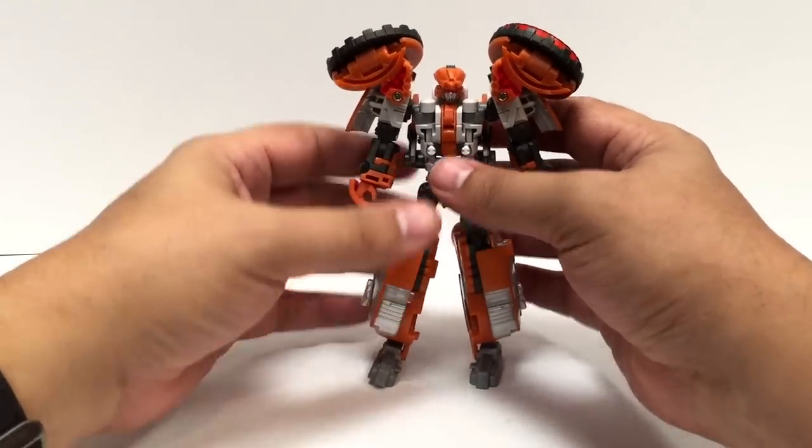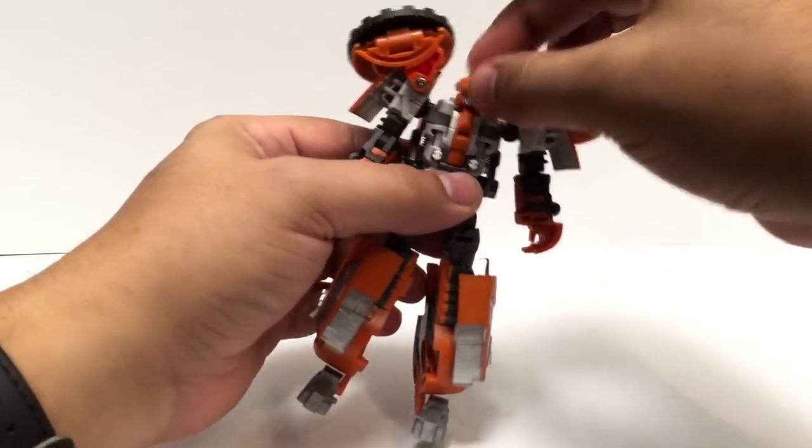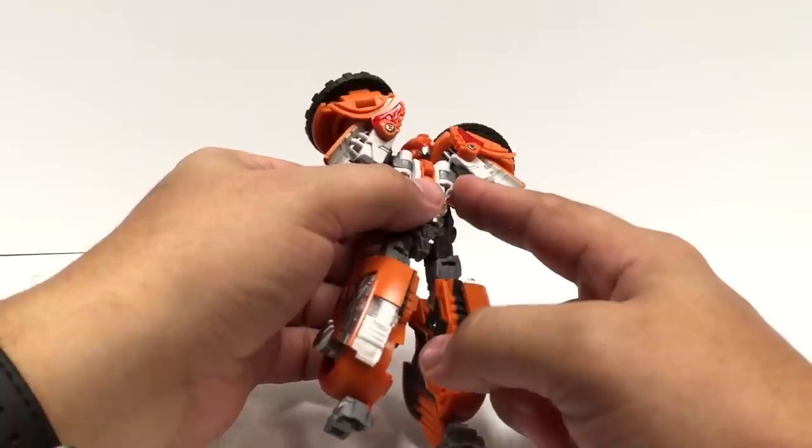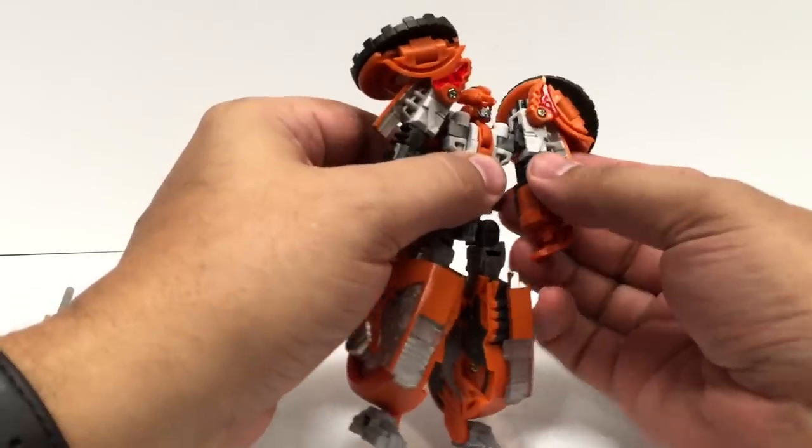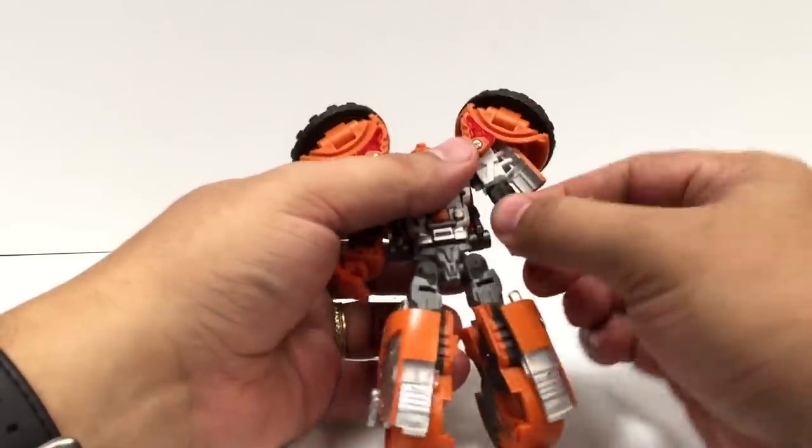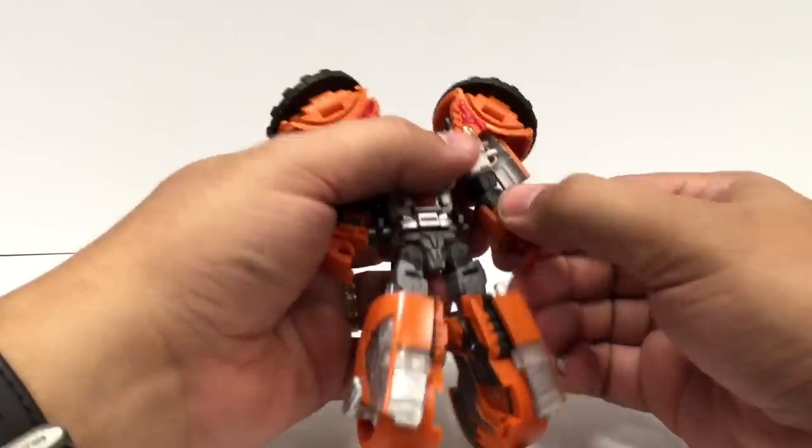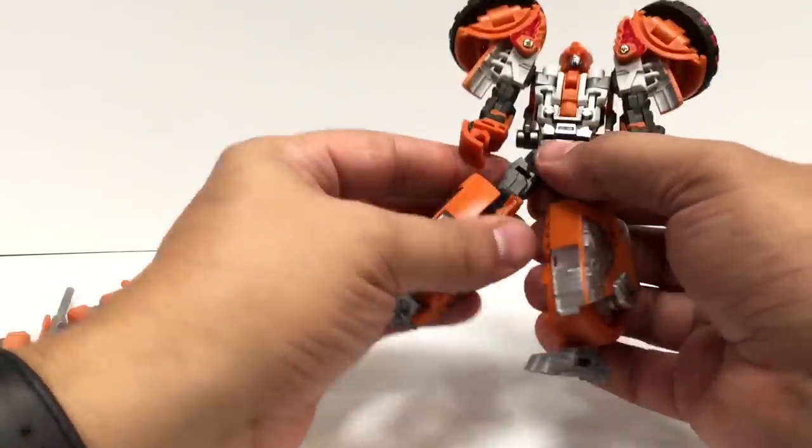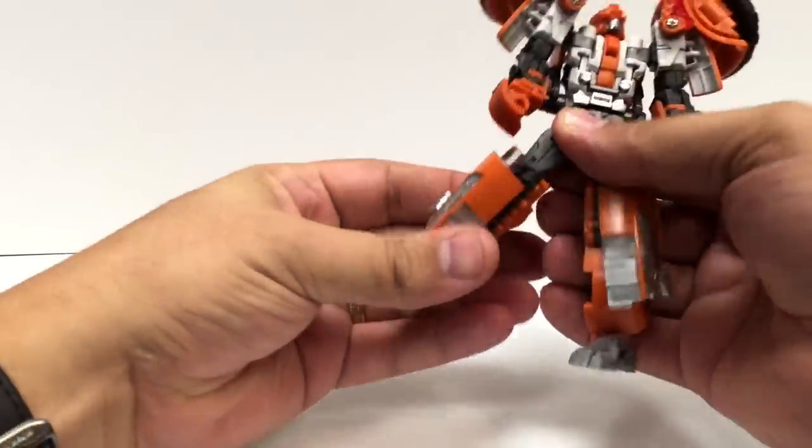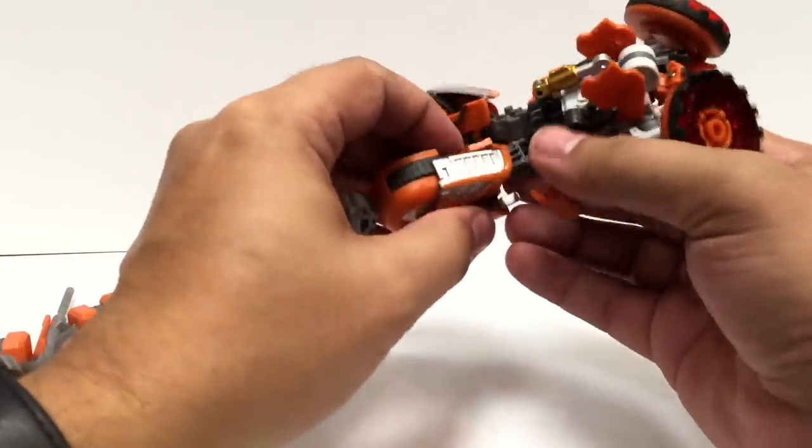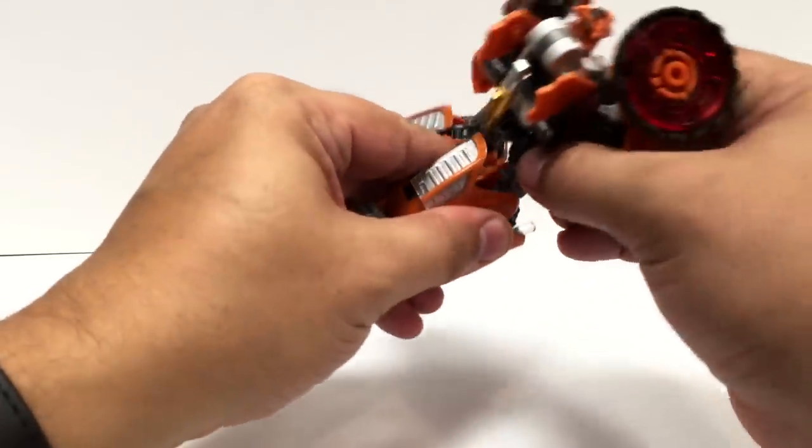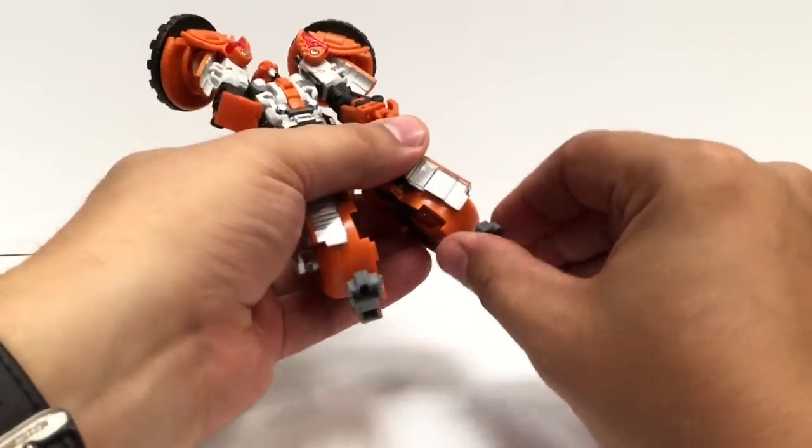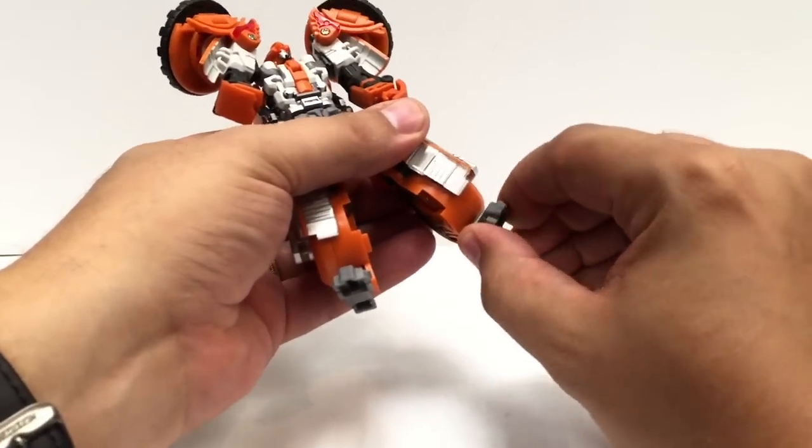He's pretty cool. He's got the ball jointed head up here, the same shoulders we've been seeing on all the limb bots - this same shoulder joint system with a ball joint and the hinge. He does have a bicep swivel, hinge elbows, and a wrist swivel. The waist swivel, the ball jointed hips, then the thigh swivel. The knees have a little limited range of motion due to these shields, but because of the way they transform you can move that shield down out of the way to get more range of motion in the knee. He's got the ball joints on his feet so he can keep his foot flat in a lot of different positions.